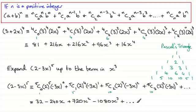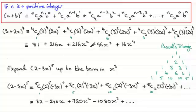It's also worth pointing out that when you do something like this, notice how we've got an oscillating sequence of terms — a minus followed by a plus followed by a minus. This would be the case for something like this. So when you expand, you'll either get something all in positive terms, or it might come out oscillating, or with all negative terms. It's quite a valuable check to see what type of pattern structure comes through.